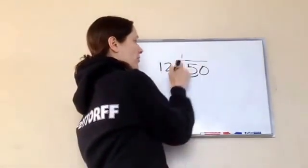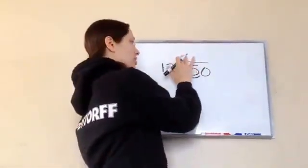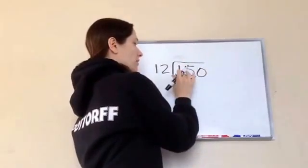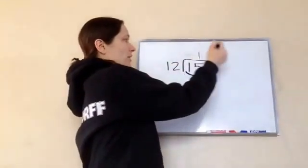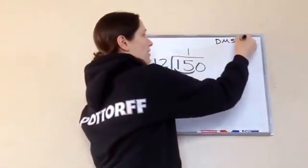We don't want to just put it over here because we're not working with just one. We want it over the 15 because that covers all of it. Very good. So 12 times 1, let's do our divide, multiply, subtract, bring down.